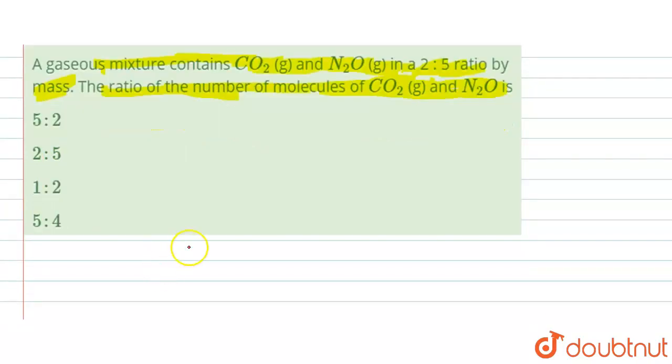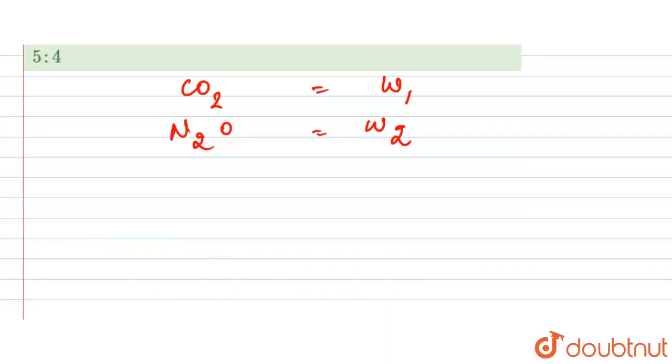For the CO2, let the weight be w1, and for the N2O, let it be w2. So we are given the ratio for w1/w2, that is the mass ratio. So here, w1/w2 will be equal to 2/5.